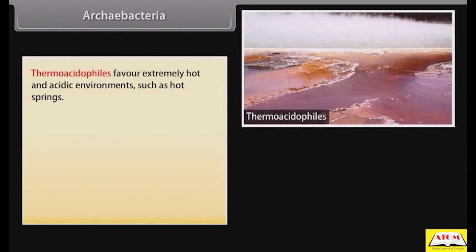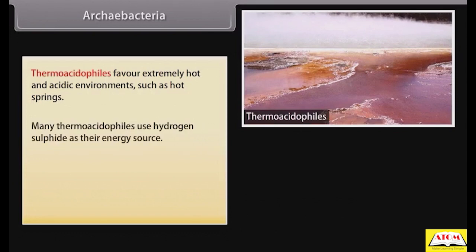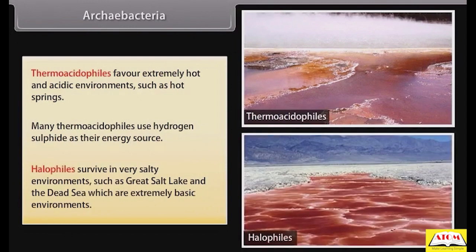Thermoacidophiles favor extremely hot and acidic environments such as hot springs; many use hydrogen sulfide as their energy source. Halophiles survive in very salty environments such as the Great Salt Lake and the Dead Sea, which are extremely basic environments.